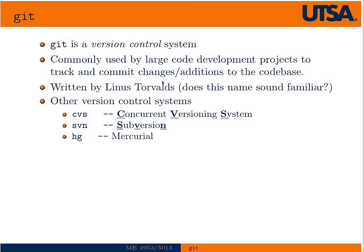Git is not the only version control system — CVS and SVN have been around a long time, and HG is another that's less common. CVS and SVN are probably still more common between the two of them, but every day people are moving their projects to Git because it's a great piece of software. It was written by Linus Torvalds, who wrote the original Linux kernel.